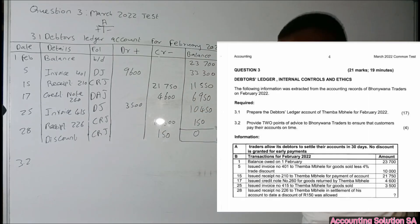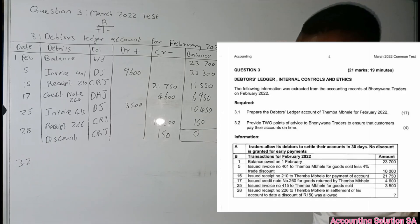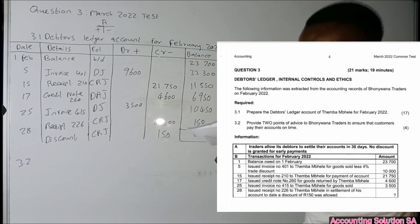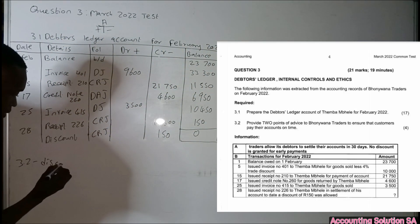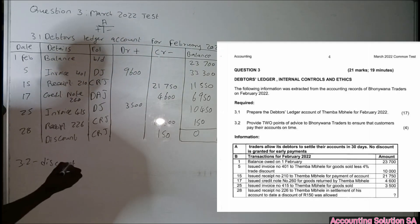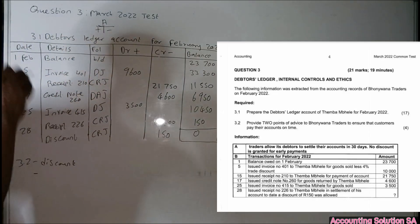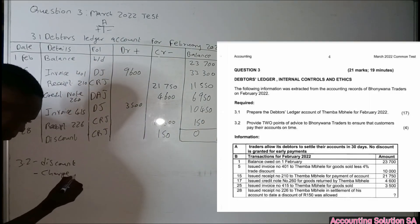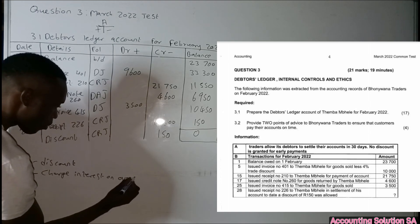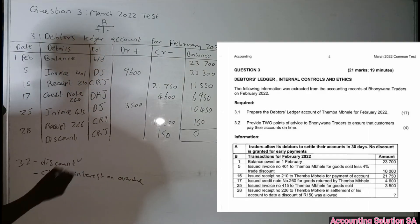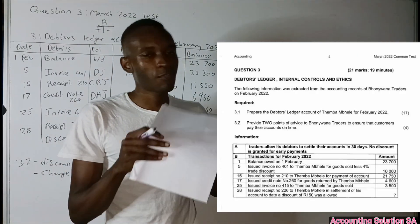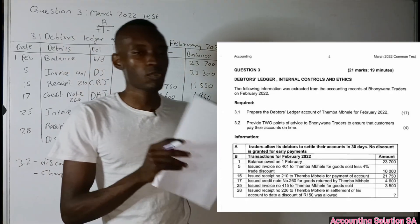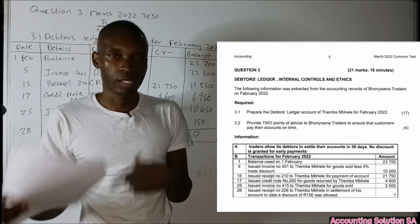For question 3.2, they asked us to provide two points of advice for Bonwana Traders to ensure customers pay their accounts on time. Number one: tell customers that if they pay on time you will give them a discount — everyone wants a discount, so most will pay on time. Number two: tell customers that if they do not pay on time you will charge interest on overdue amounts. Those are the two answers for this question.